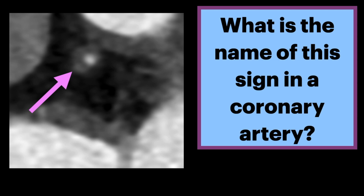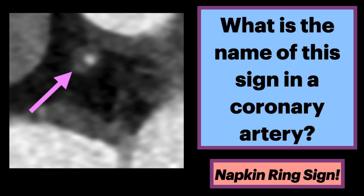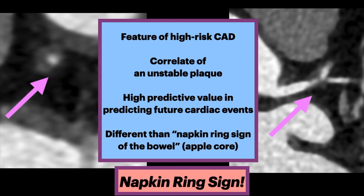What is the name of this sign in a coronary artery? This coronary CT angiogram shows the distal left main coronary artery with greater than 70% stenosis and circumferential atherosclerotic plaque. The answer is a napkin ring sign. This is a feature of high-risk coronary artery disease.